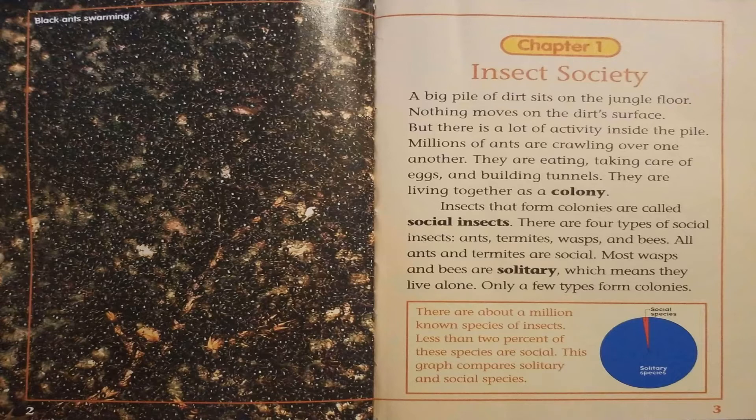Insects that form colonies are called social insects. There are four types of social insects: ants, termites, wasps, and bees.